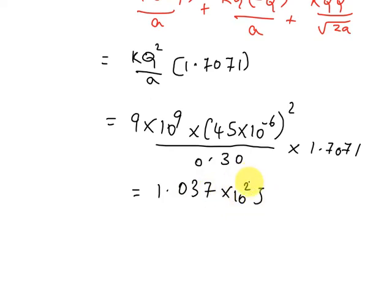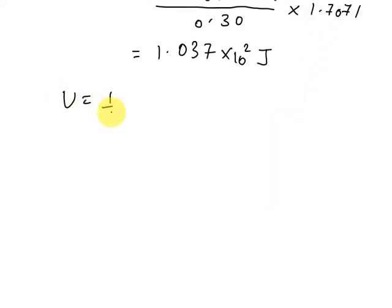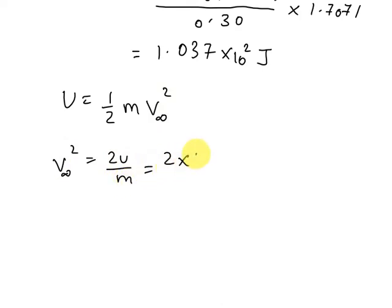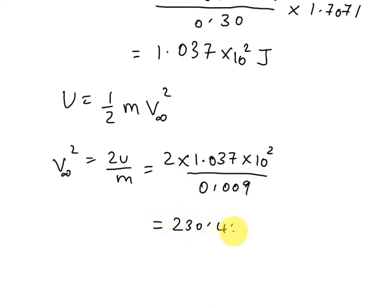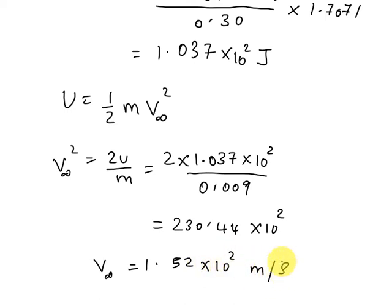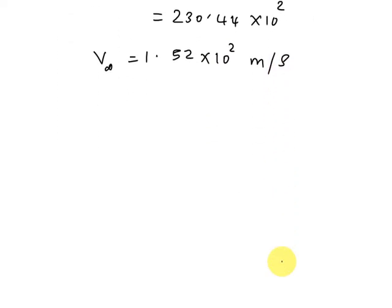Using conservation of energy, we get M · V∞² = 2U, so V∞² = 2U/M = 2 × 1.037×10² / 0.009 = 230.44 × 10². Therefore, V∞ = 1.52 × 10² m/s, which is the velocity of +Q at infinity.